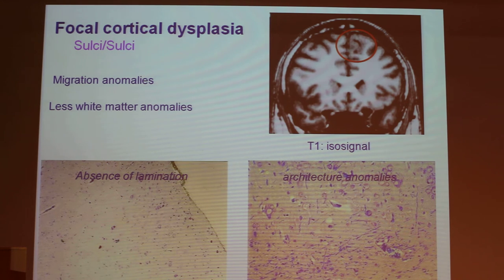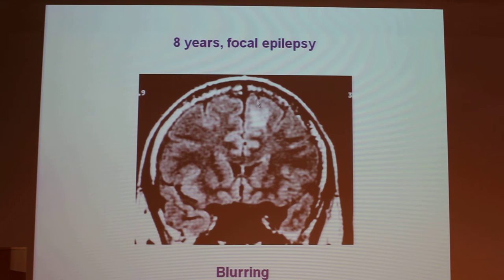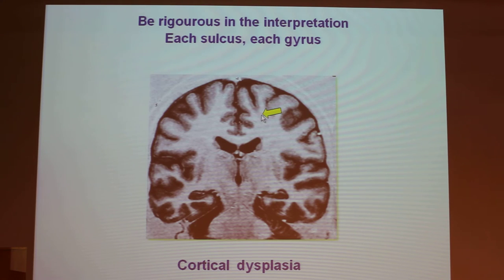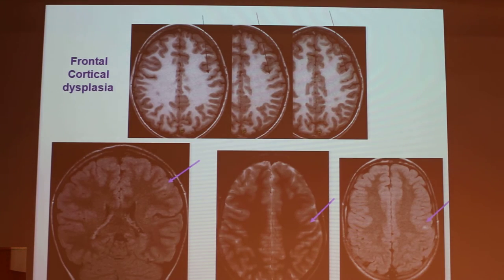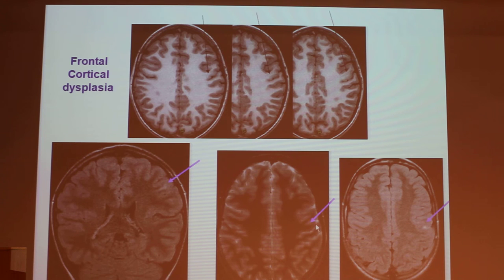For cortical dysplasia, it is also very difficult. It is a migration anomaly with less white matter anomaly. On T1 you have an iso-signal, and on T2 you have a blurring — you don't see very well the boundary between cortex and white matter. You have to be very rigorous in interpretation, seeing each sulcus and each gyrus. In frontal cortical dysplasia on 3D T1, you can identify it, and on one slice there is hyper-intensity on FLAIR that may not be seen on T2. It is very important to be rigorous.